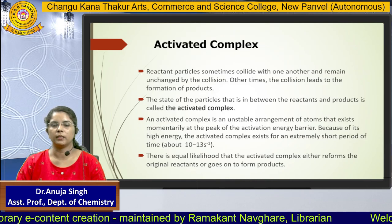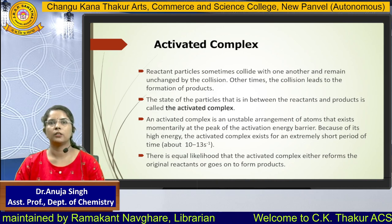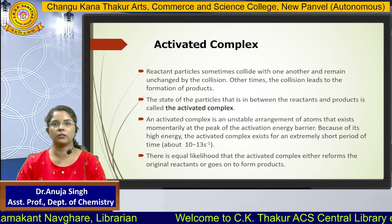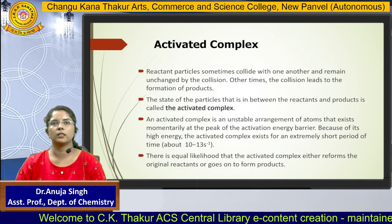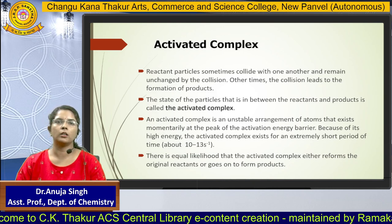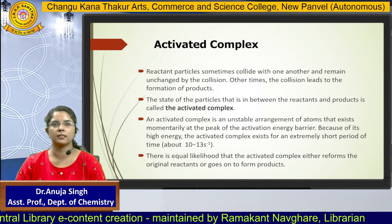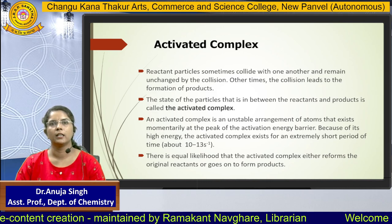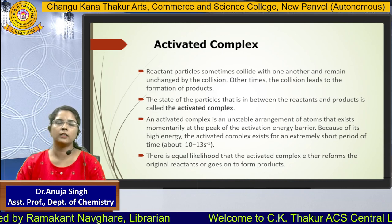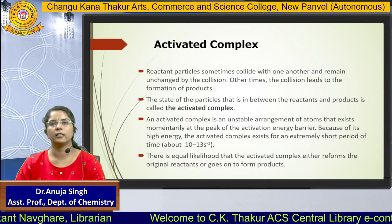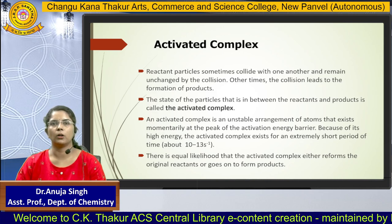The activated complex is also called the intermediate form during the reaction. This intermediate cannot be identified or characterized, but it forms during the reaction. There will be bond breaking and bond forming processes taking place. First, from the reactant, bonds will start breaking and it will convert into the activated complex. Then some bonds will start forming, and the activated complex will convert into product. So it is a bond forming and bond breaking process.